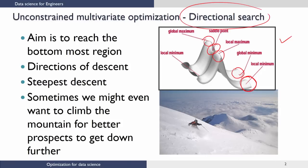When you look at optimization algorithms, the aim is for us to reach the global minimum. We want to avoid local minima because while locally we cannot make our algorithm find anything better, we know that globally this is not the best. We also want to avoid saddle points. If you are at a particular point, you would look around and find the direction where you will go down the fastest — this is a direction we call the steepest descent.